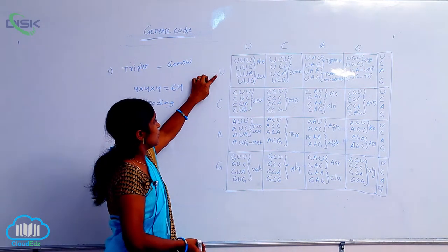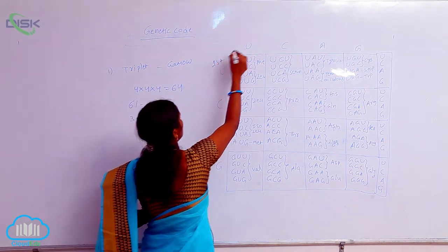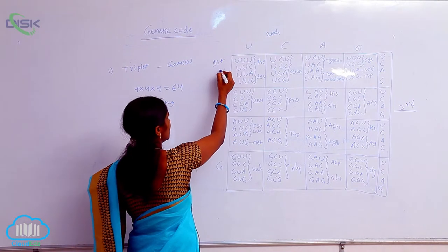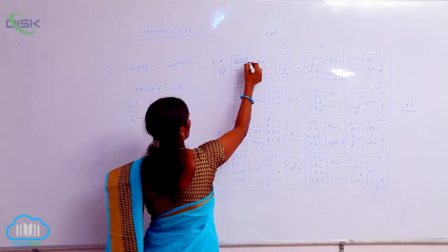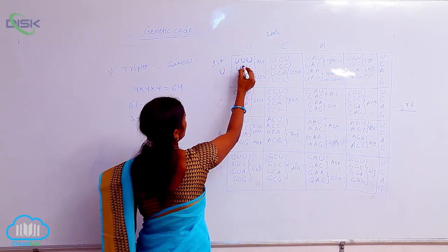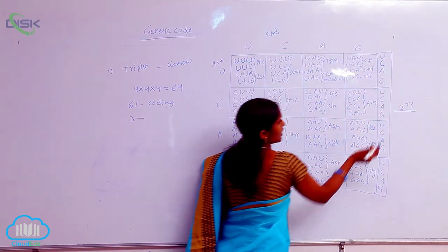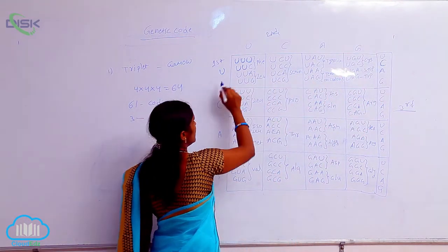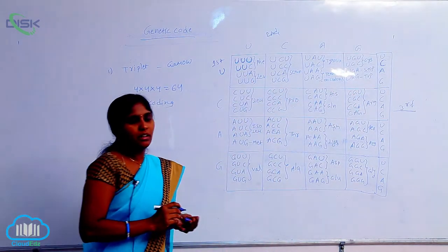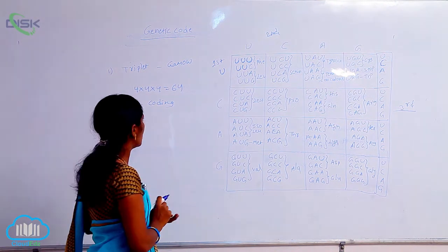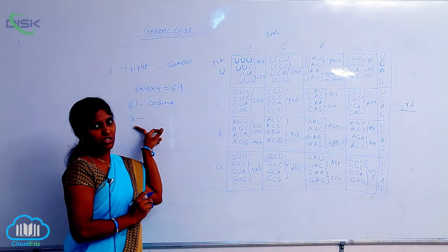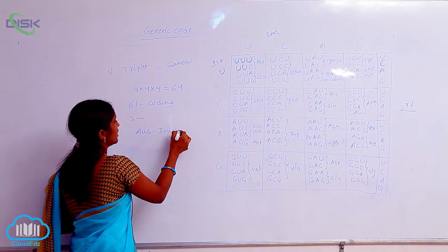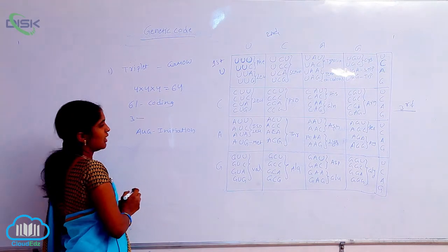The 64 codons are constructed with U, C, A, G in first, second, and third positions. Out of 61 coding codons, AUG works as the initiation codon. The 3 termination codons are UAA, UAG, and UGA. These 3 are also called nonsense codons or termination codons — they do not code any amino acid.